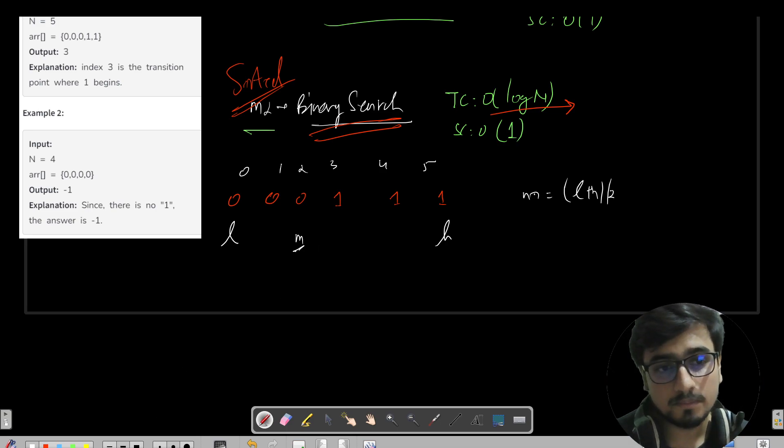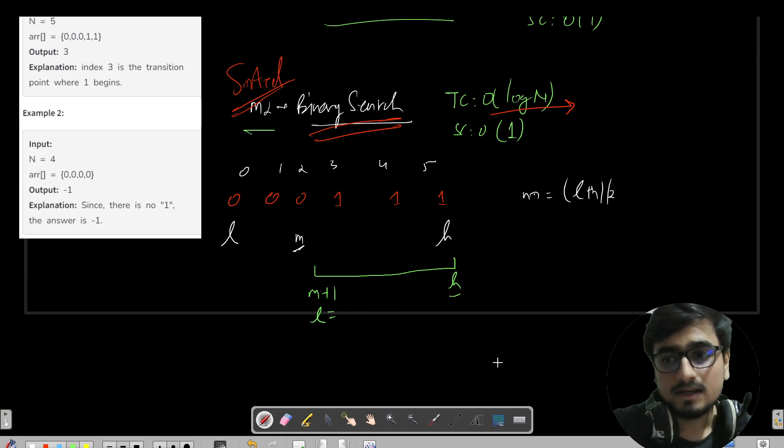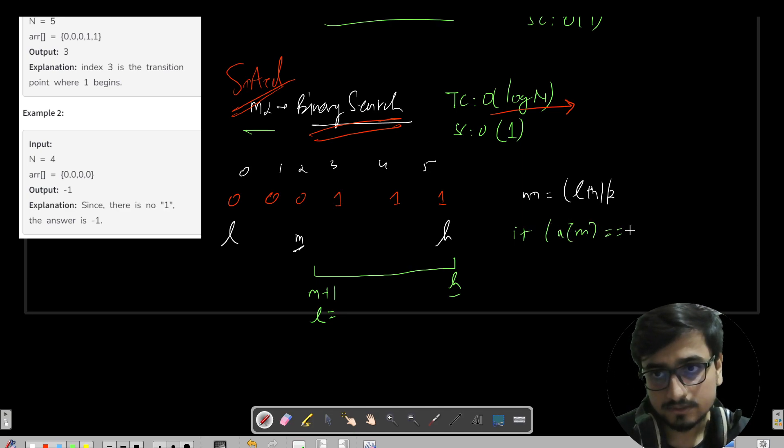Now it is zero. It is zero, it is sorted, and I want to search for one. Then definitely I need to make my binary search call for this portion, that is from m plus 1 to h. That means your updated l is equals to m plus 1 and your h remains same.